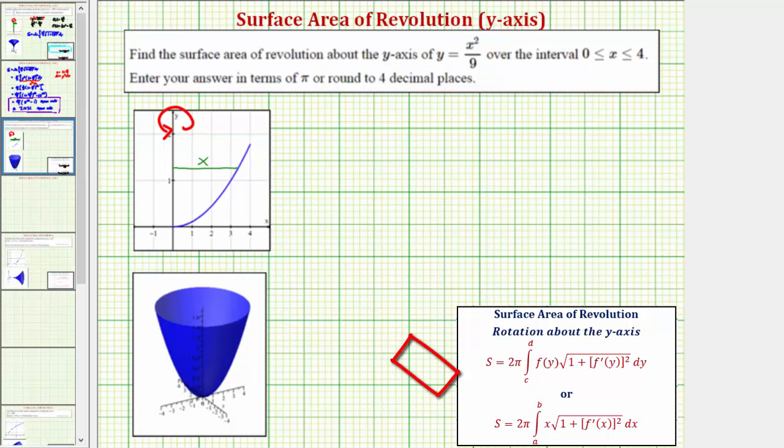So you might be asking which formula we should use. We want to use the formula where the derivative function would be simpler. So looking at the given function y, which equals f of x, notice how f prime of x would just be 2 ninths x, which is pretty simple.